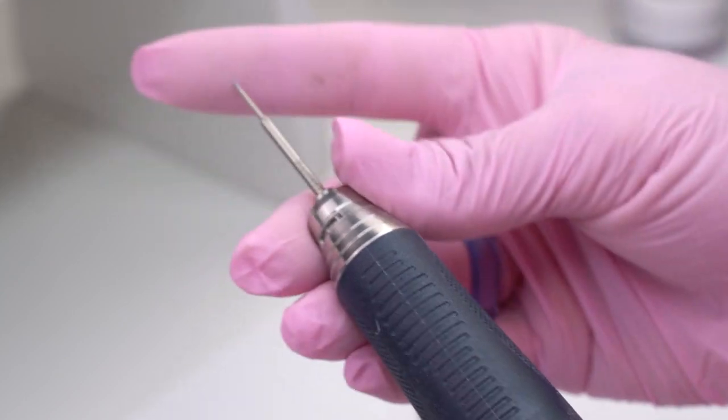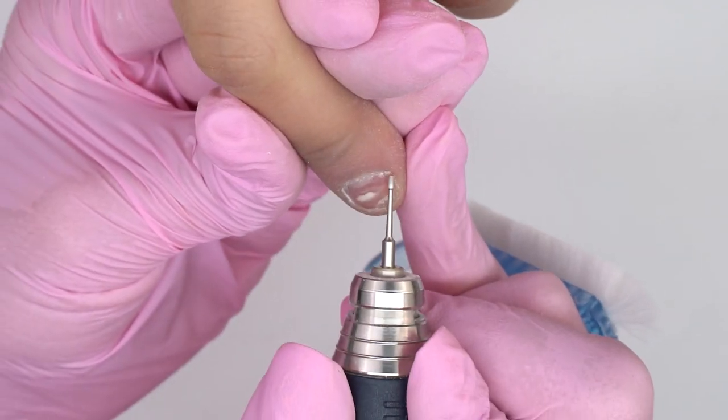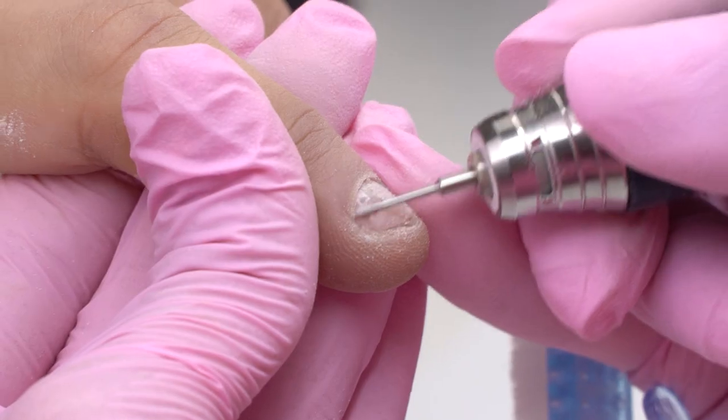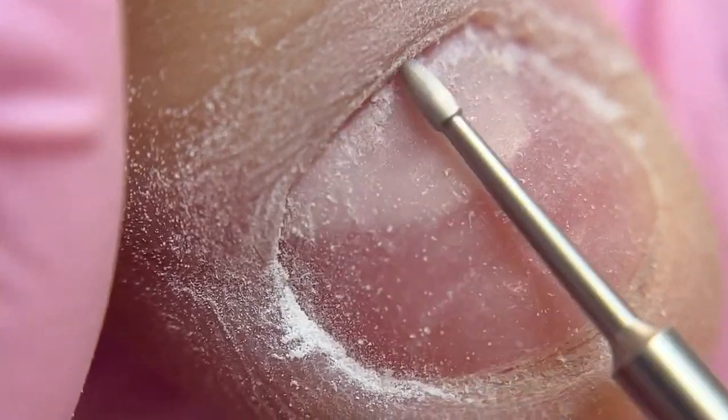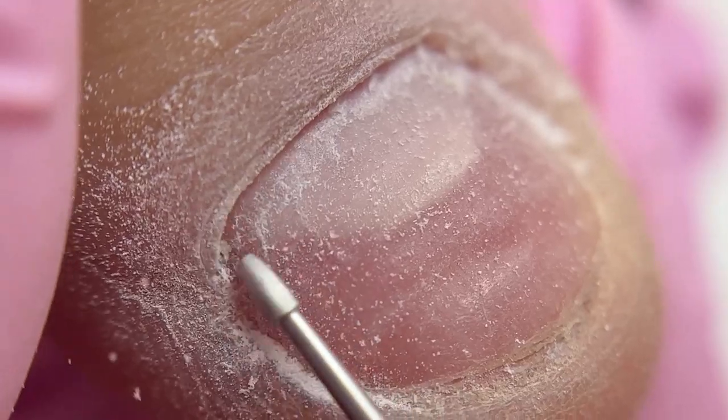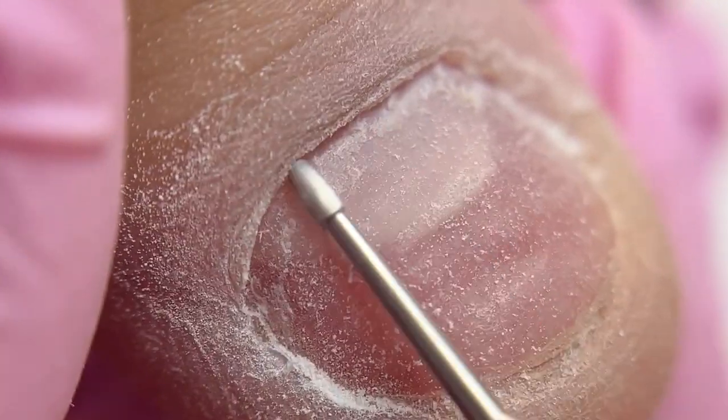First, I lift up the cuticle using a safe drill bit. This bit has got no abrasive, so it is perfect for such badly spreading cuticles. It will not over-file the nail plate, so it is great for beginners.